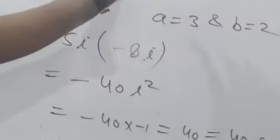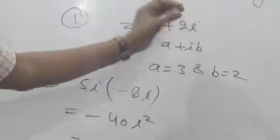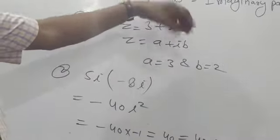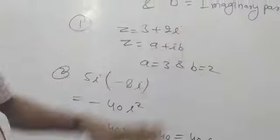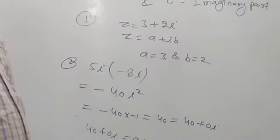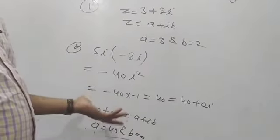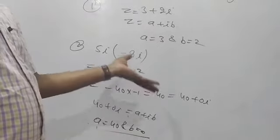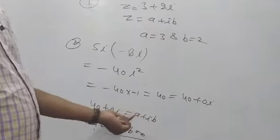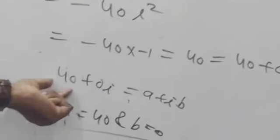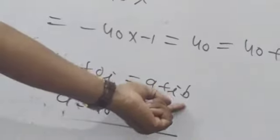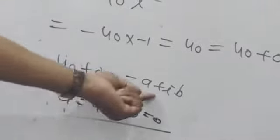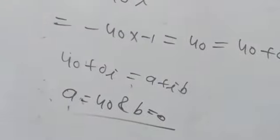First of all, open the bracket, multiply or divide — whatever calculations are possible in the given question — we calculate first. After that, comparing the result to A + iB, then A is the real part (that is 40 here) and B is the imaginary part (that is 0). So A = 40, B = 0.